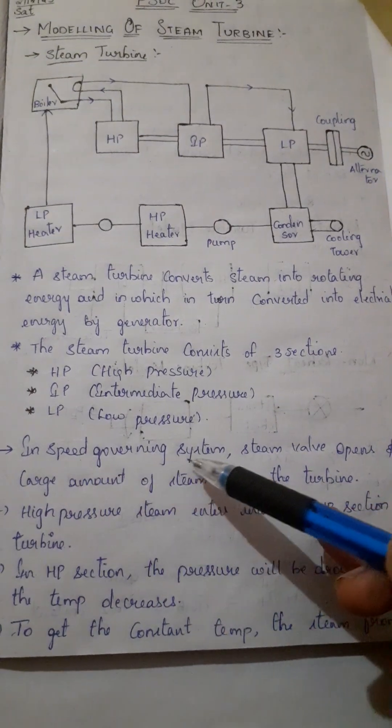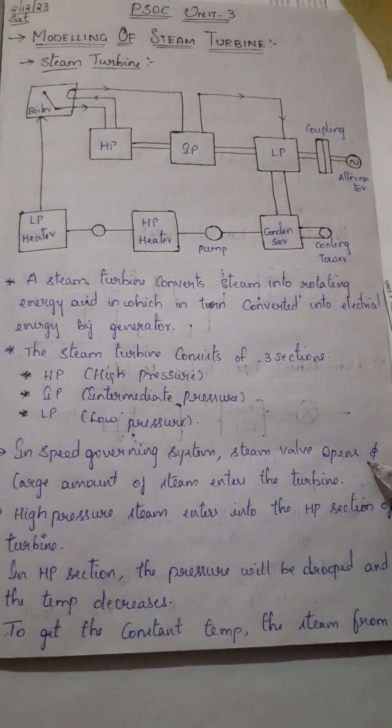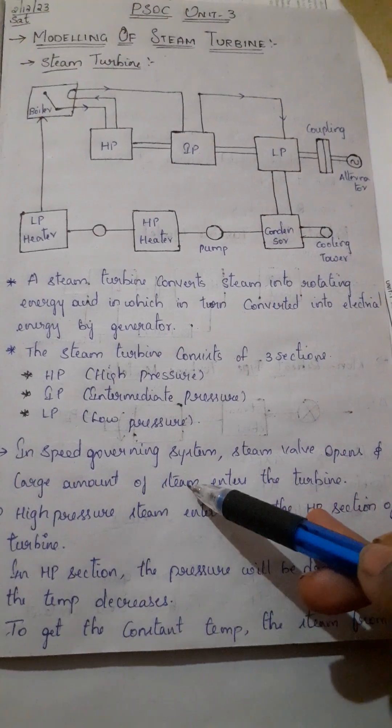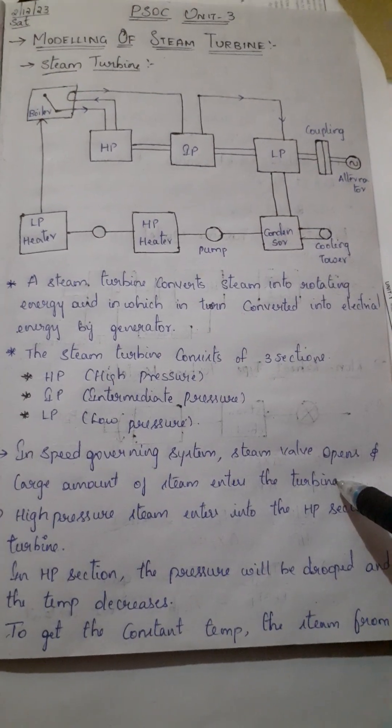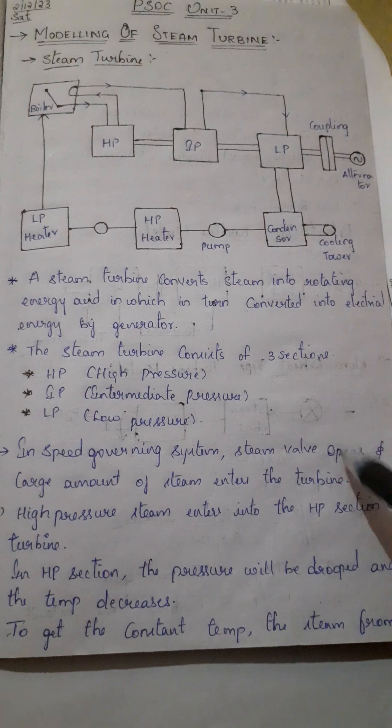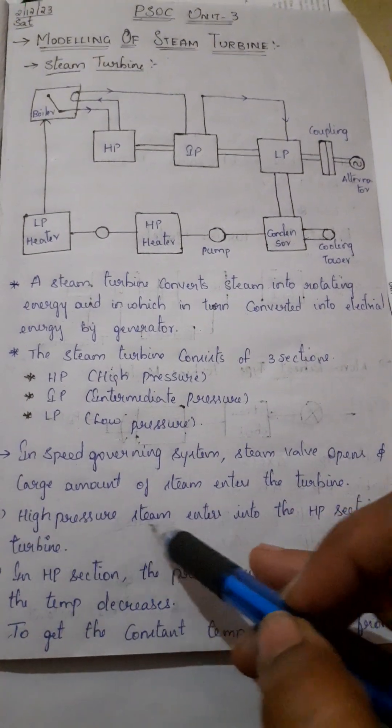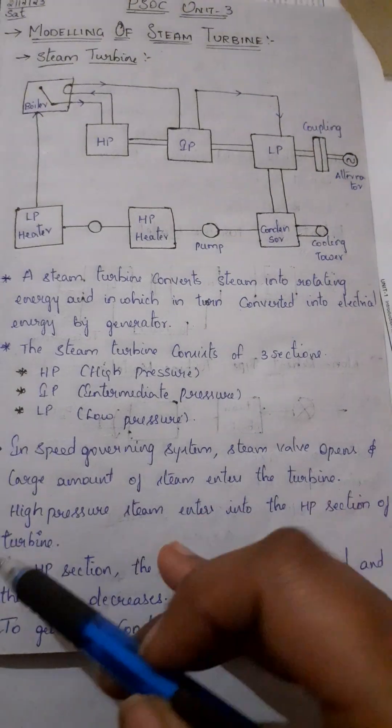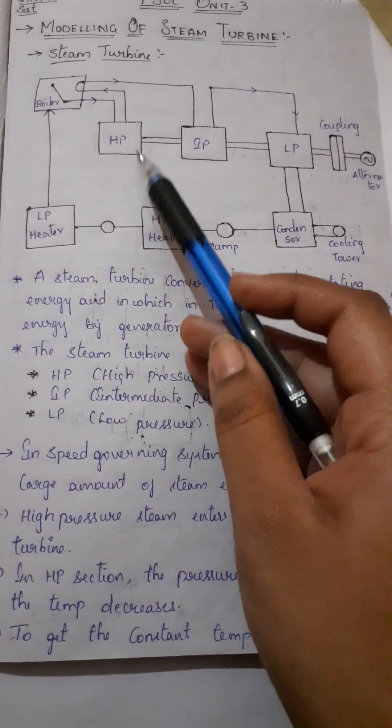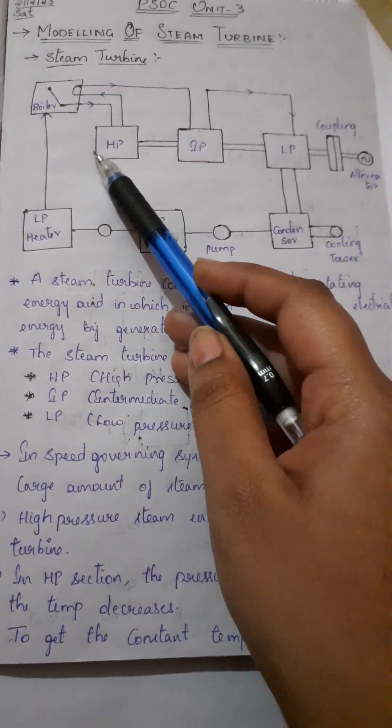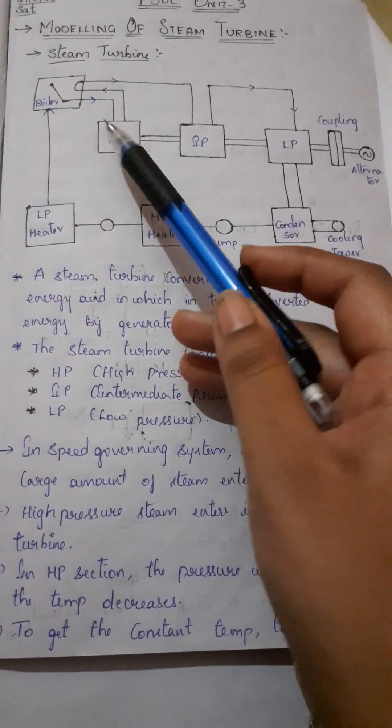In speed governing system, steam valve opens and large amount of steam enters into the turbine. High pressure steam enters into the HP section of turbine. Here we have high pressure steam entering the HP section of turbine.